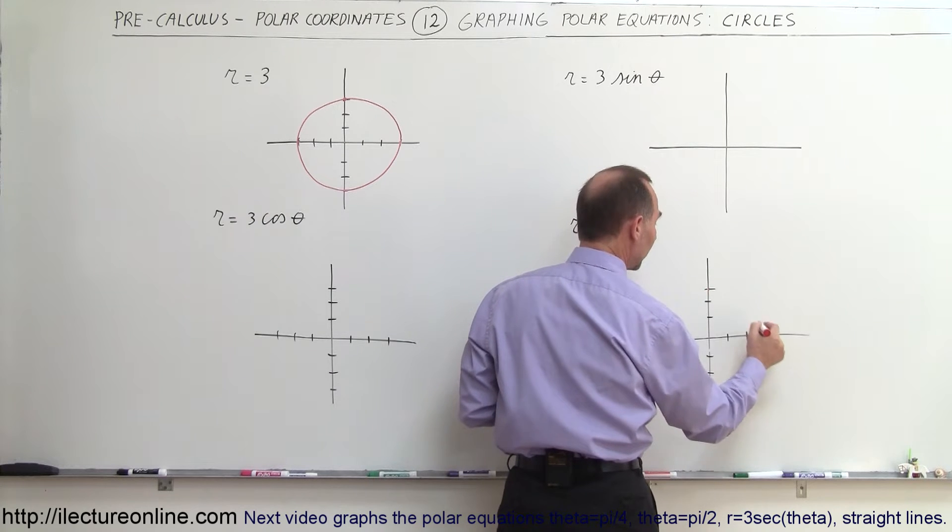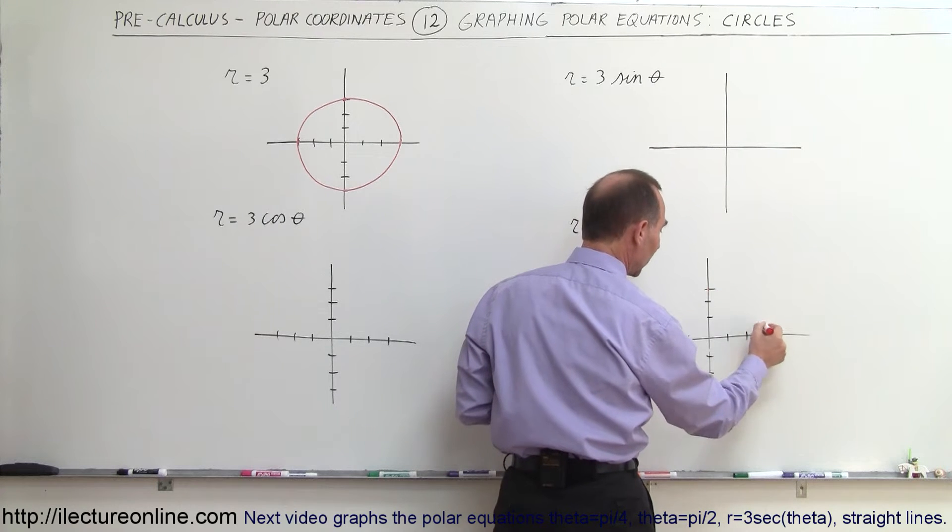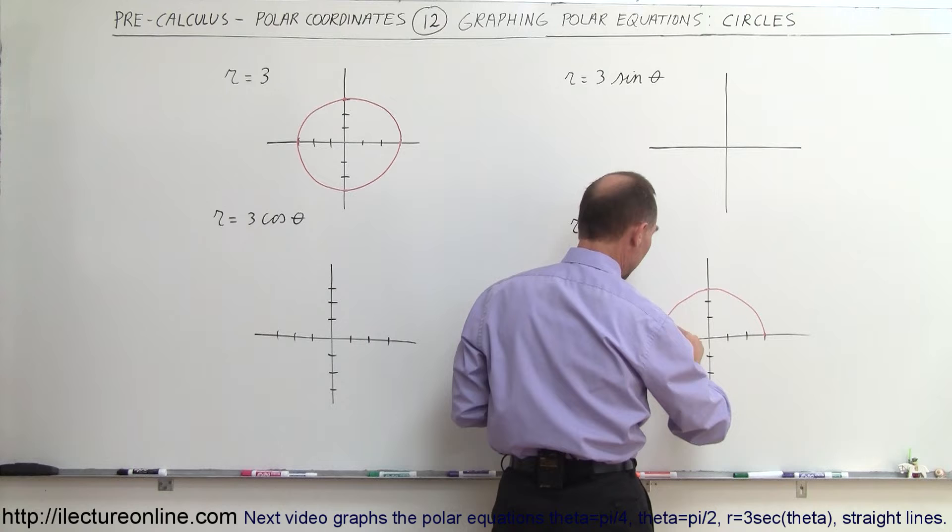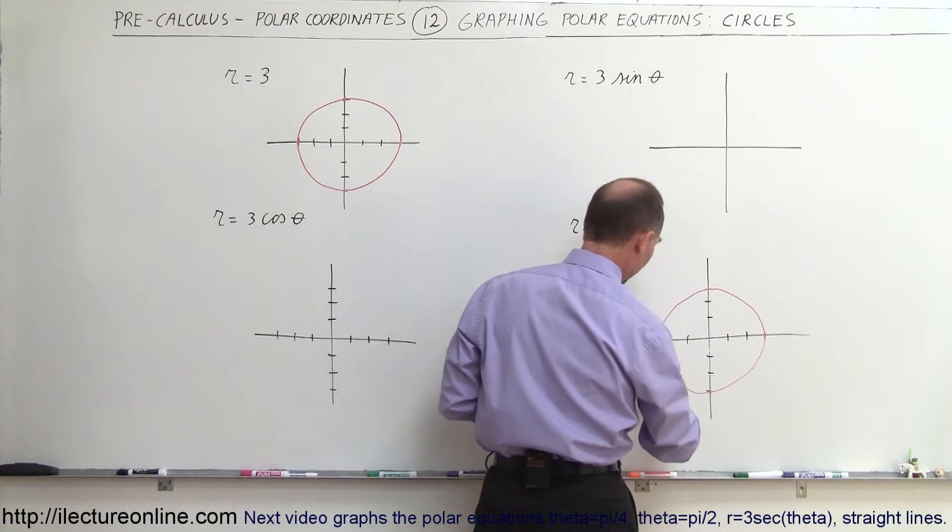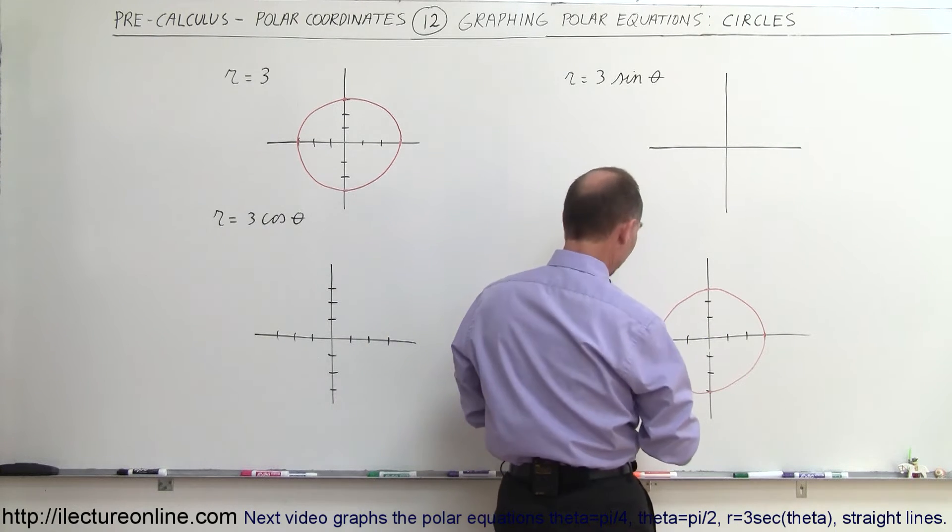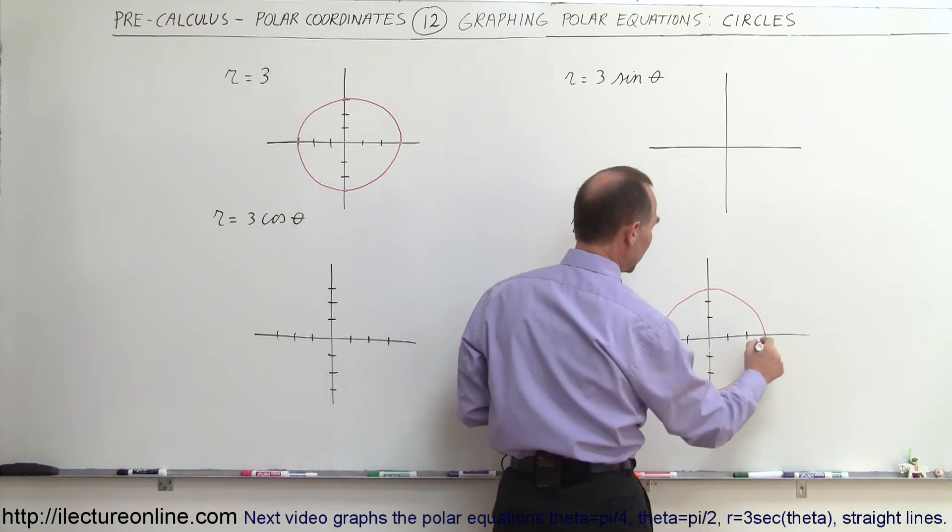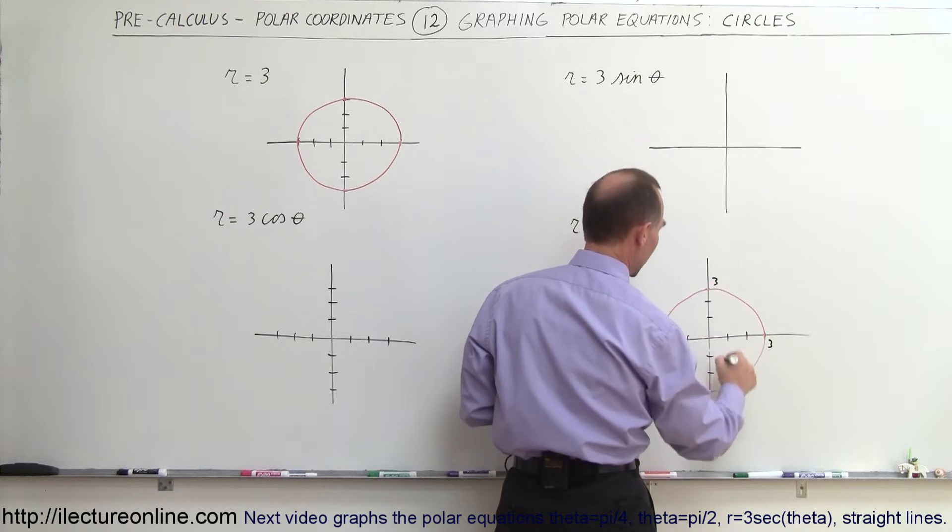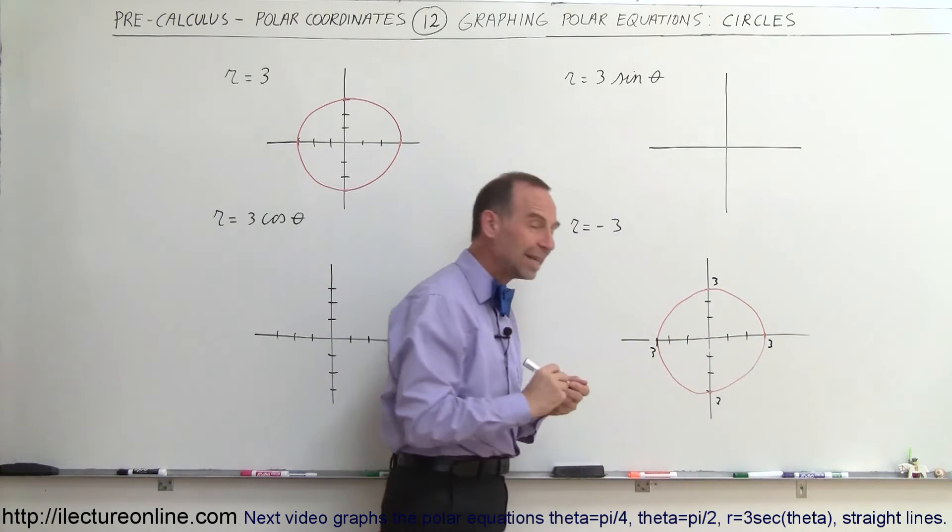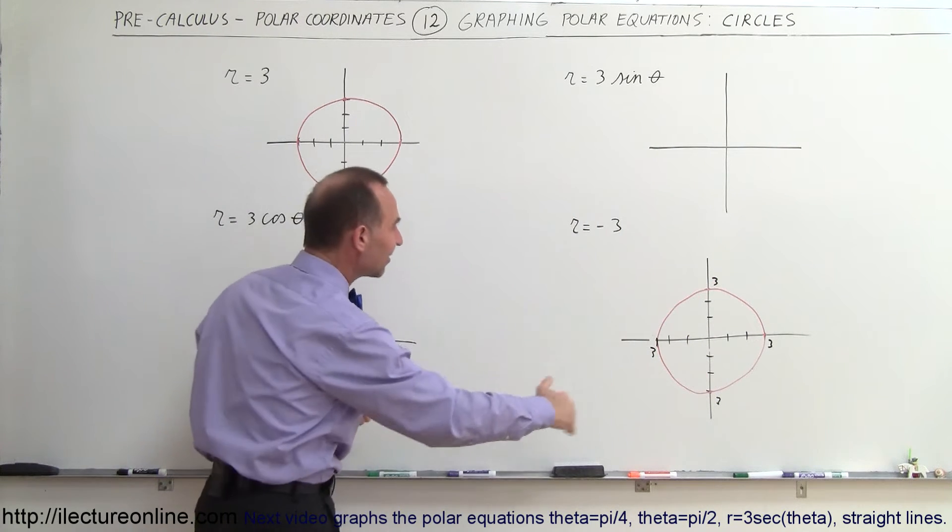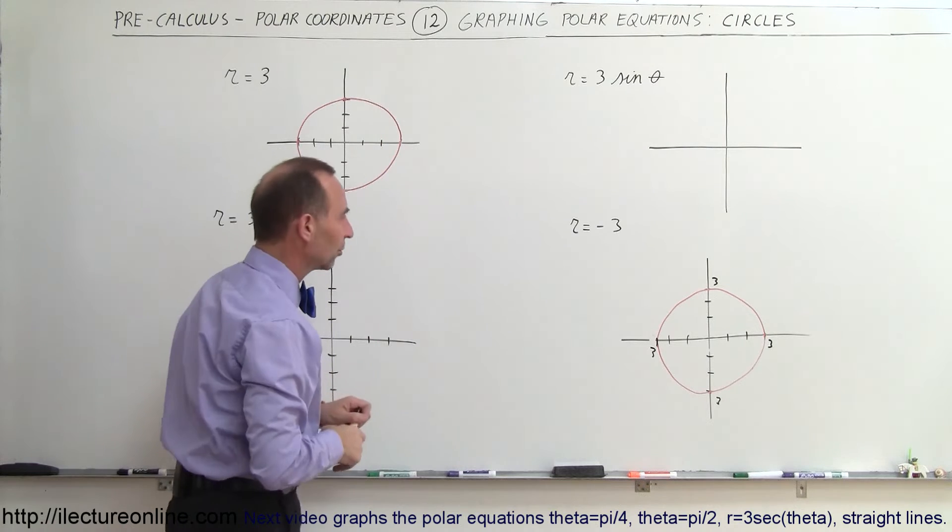So it turns out that r equals negative 3 gives us exactly the same equation as r equals 3. Again, if I'm pointing in this direction, r equals negative 3 is there. If I point in this direction, r negative 3 is over here, and so forth. So that means that we'll again get those four points, we connect those, and we get a circle. Even though we have r equals negative 3, we get the exact same graph as we do for r equals 3.